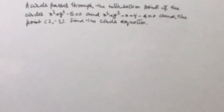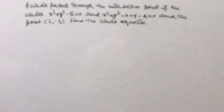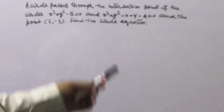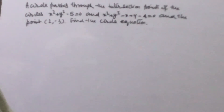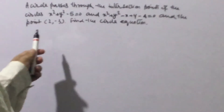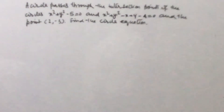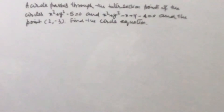Dear friends, welcome to my channel. In this video we will solve one problem on circles. The problem is: a circle passes through the intersection points of the circles x² + y² - 5 = 0 and x² + y² - x + y - 4 = 0, and the point (2, -3). Find the circle equation.